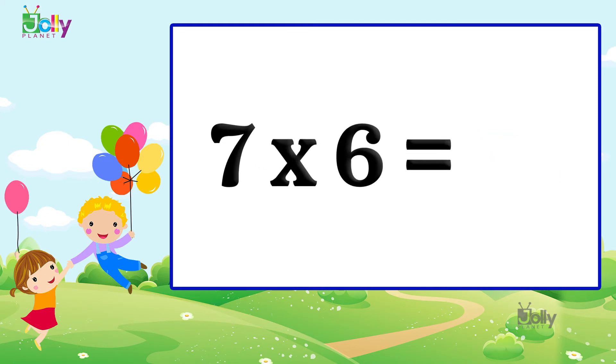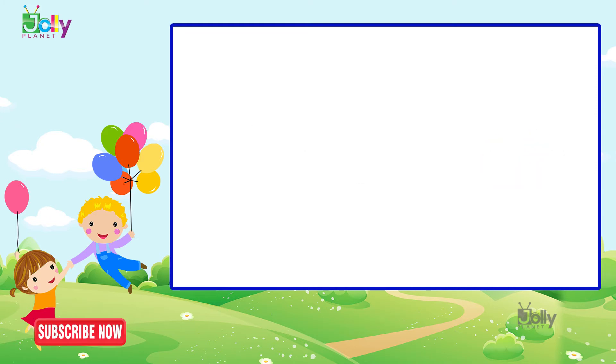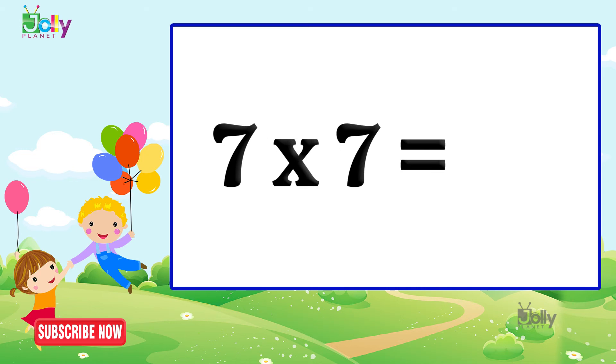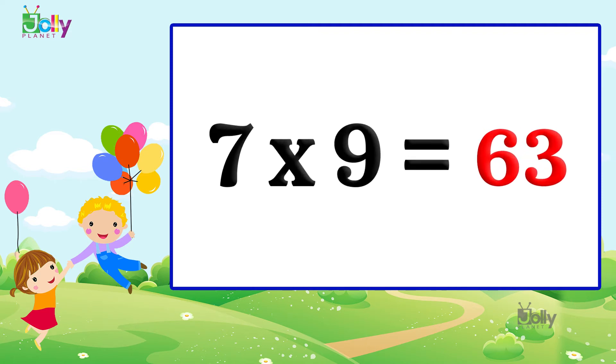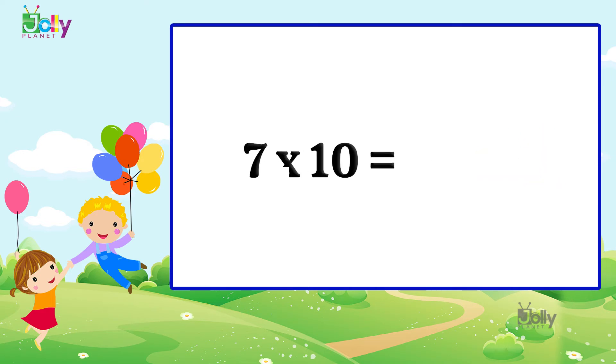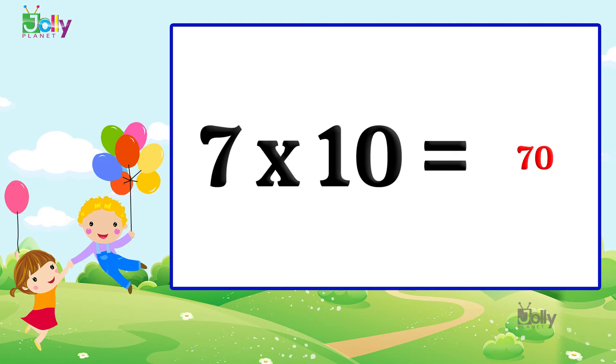Seven six are 42. Seven sevens are 49. Seven eights are 56. Seven nines are 63. Seven tens are 70.